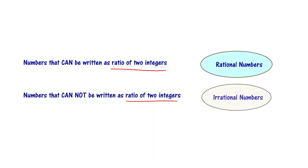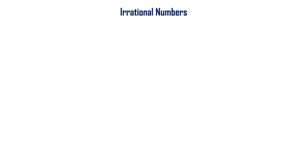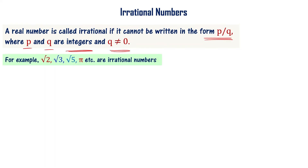A real number is called irrational if it cannot be written in the form p by q, where p and q are integers and q is not equal to zero. If a real number cannot be written as the ratio of two integers, it is an irrational number. For example, root 2, root 3, root 5, and the square root of any prime number are called irrational numbers.